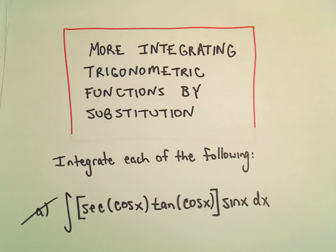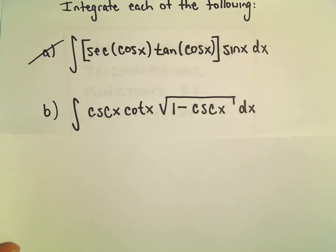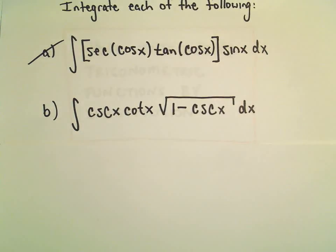So another integration problem here of a trig function by first doing a substitution. In part b we have the integral of cosecant x times cotangent x times the square root of 1 minus cosecant x.